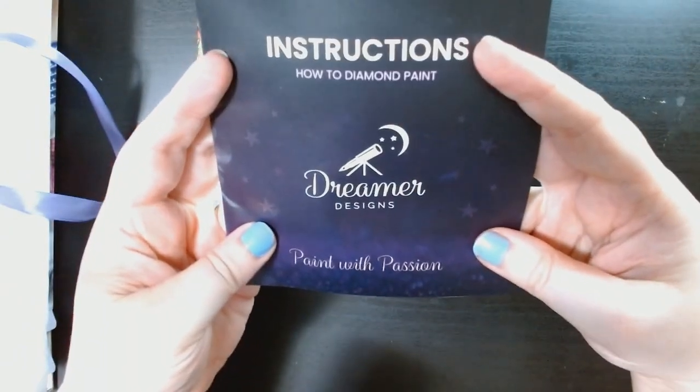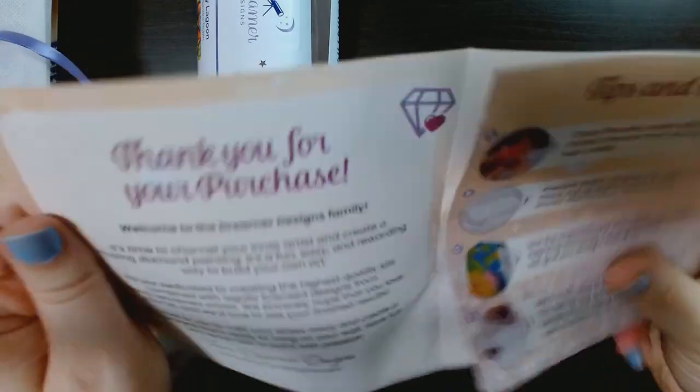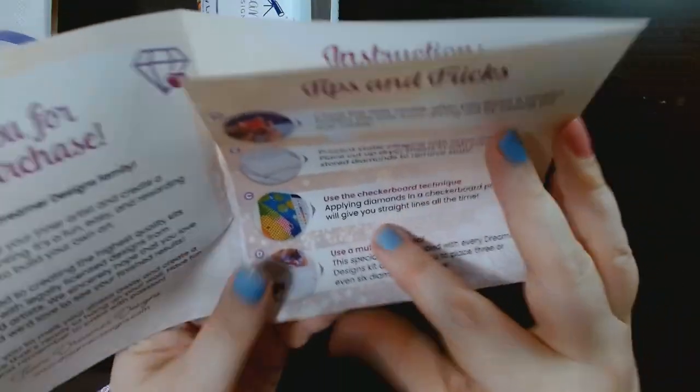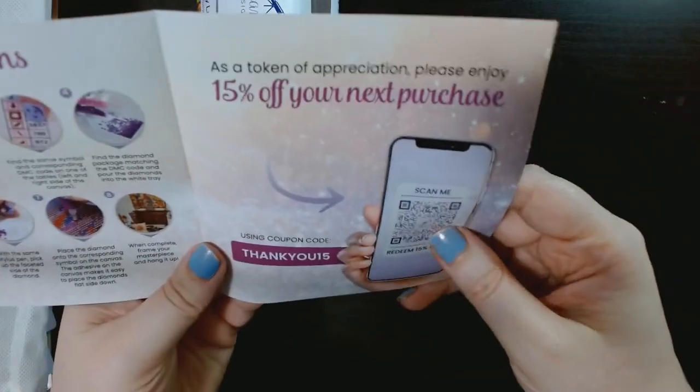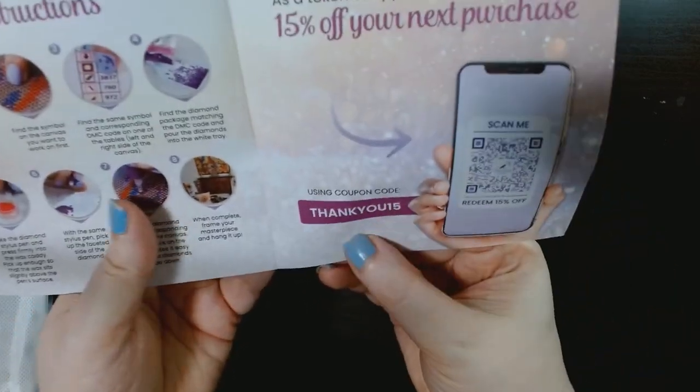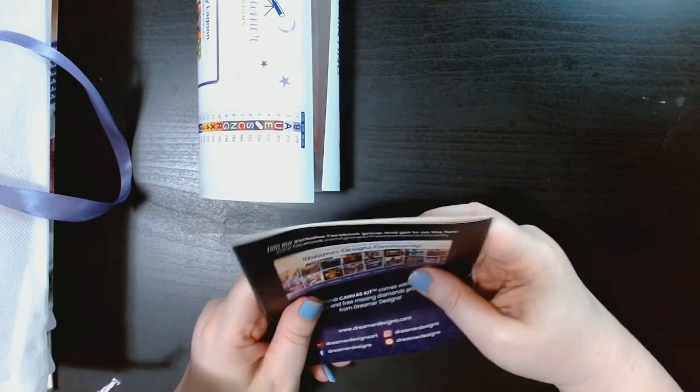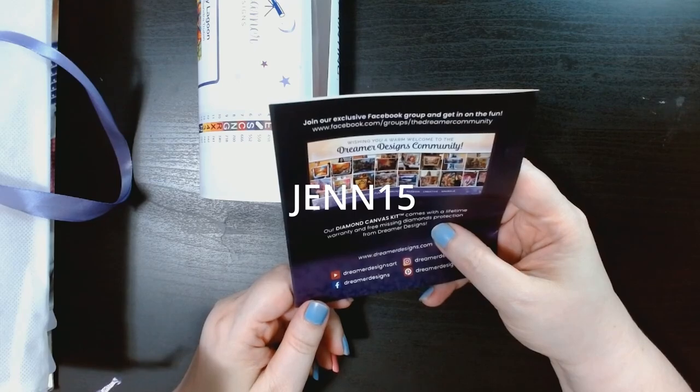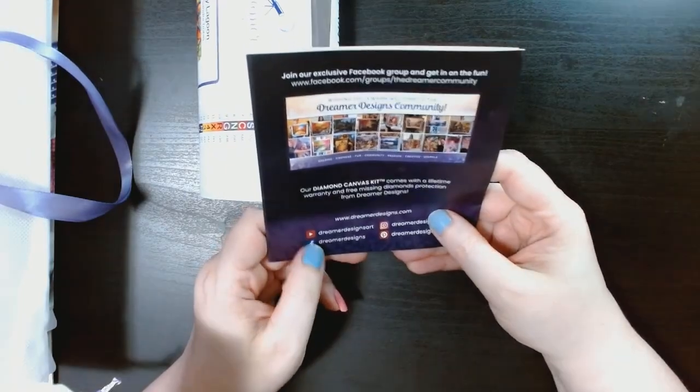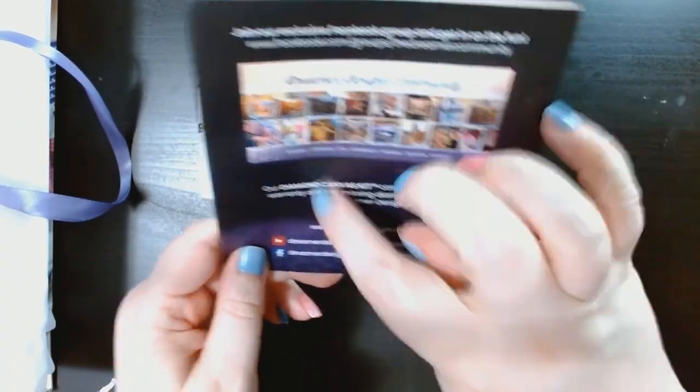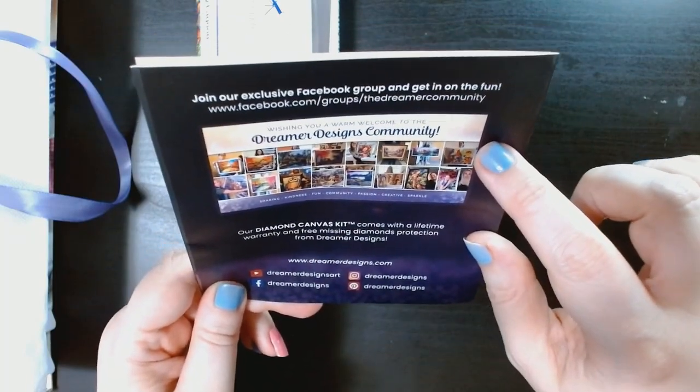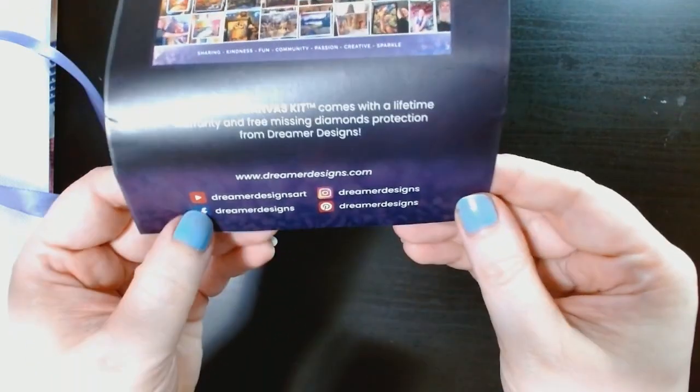So first we'll go through this little pamphlet thing. We have the instructions. Dreamer Designs, Paint with Passion. I got thank you for your purchase from the team of Dreamer Designs. You got tips and tricks. Instructions how to diamond paint. 15% off your next purchase with this scan or use the coupon. I do have an affiliate code below and you get 15% off with code Gen15. J-E-N-N-15. And if you were to use that, I do make a small commission on that. On the back it has the Facebook group. Then it has all the other socials: YouTube, Facebook, Instagram, and Pinterest.